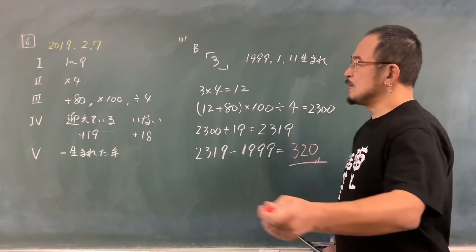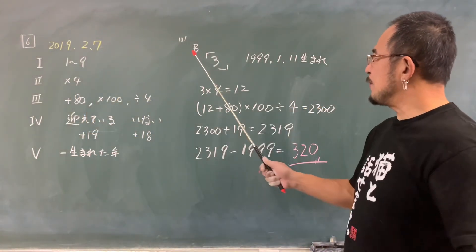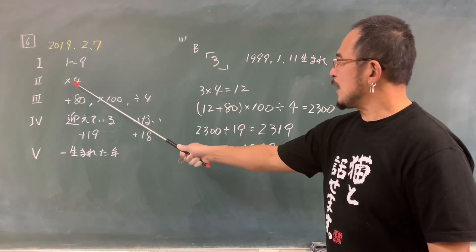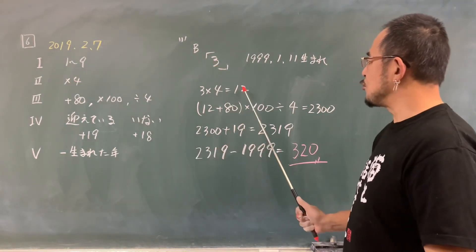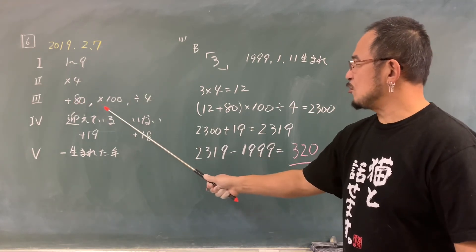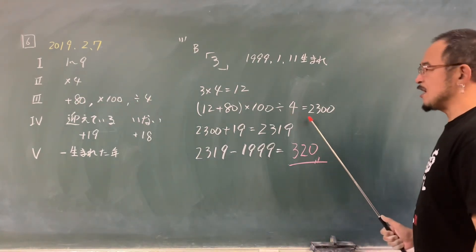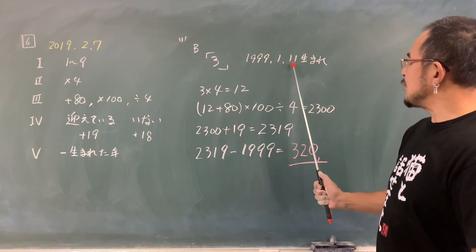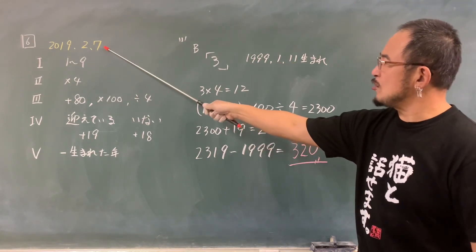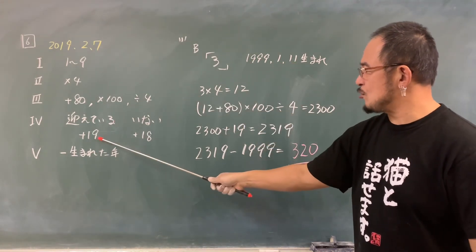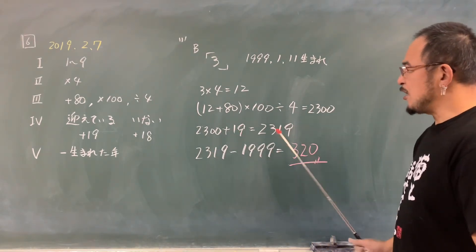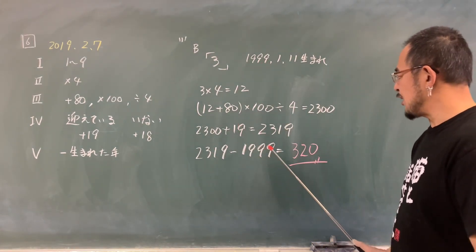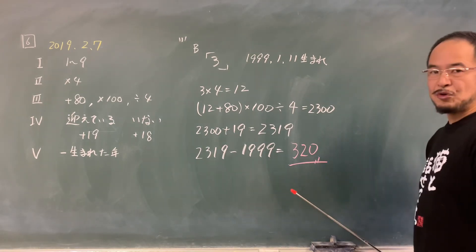6番です。まず、Bさんは3を思い浮かびました。そして×4で12。80足して100をかけて4で割ると2300。1月11日までですから、今年もう既に誕生日を迎えていますので19を足します。生まれた年、1999を引いた結果、320ですということになりました。